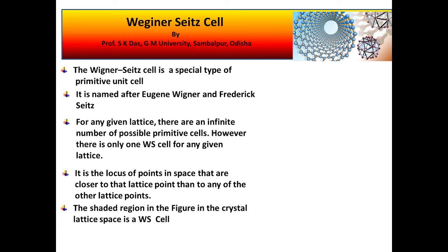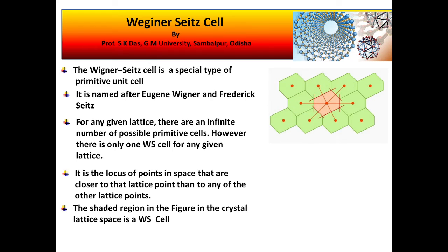The shaded region in the figure is the Wigner-Seitz cell. In this figure, you can see the red dot points — those are our lattice points. This orange shaded region, which has been constructed by a very special means, encloses only one lattice point, and that is the Wigner-Seitz cell.